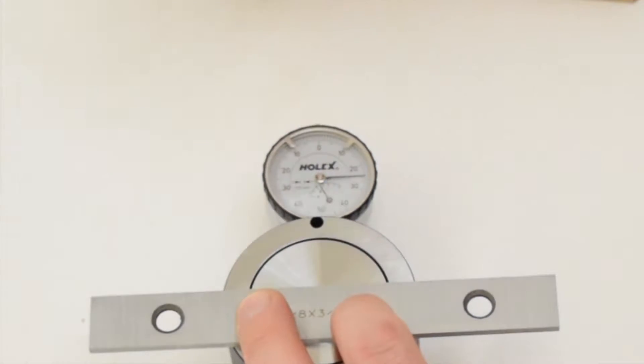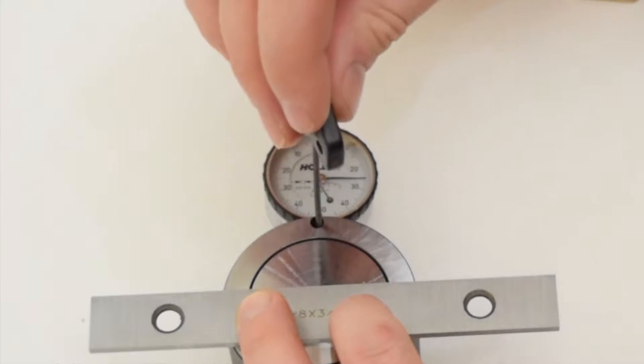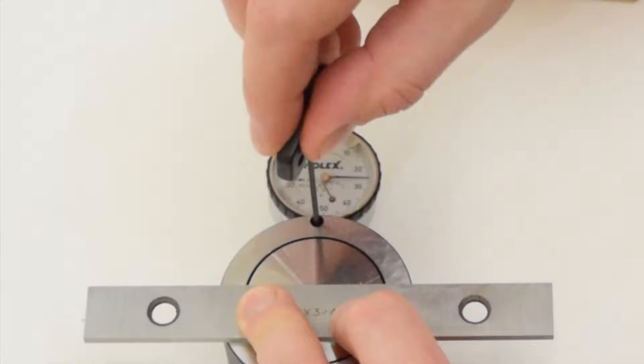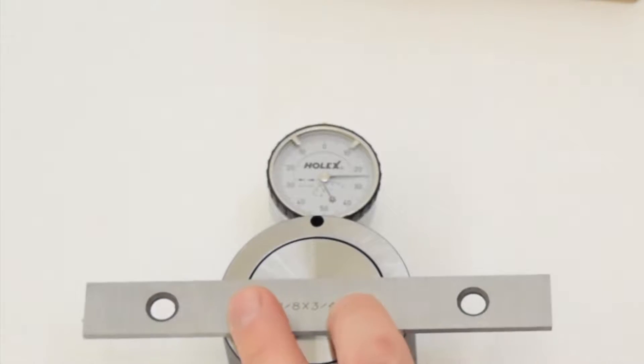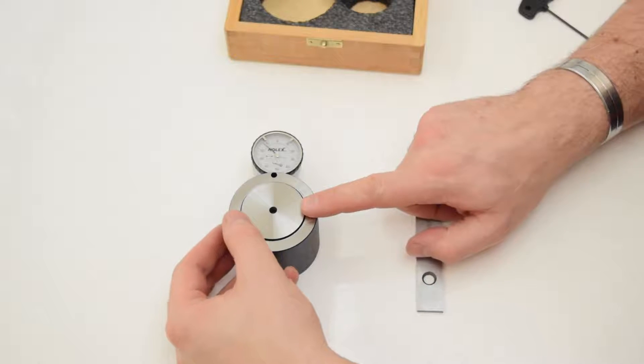There'll be a slight movement so we can just make the correction and then tighten down. The tool is now set for 49.75mm and when we release it comes back up.